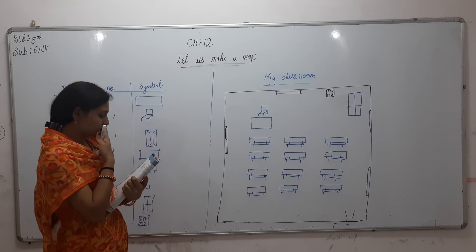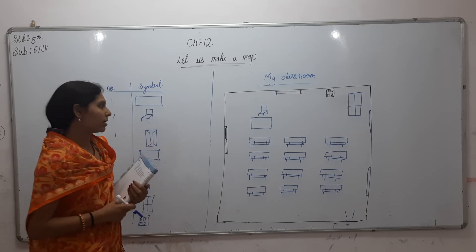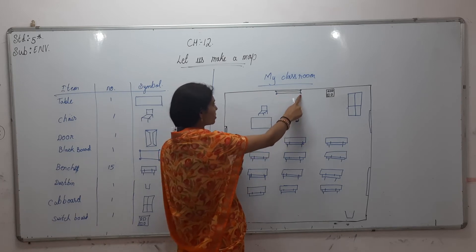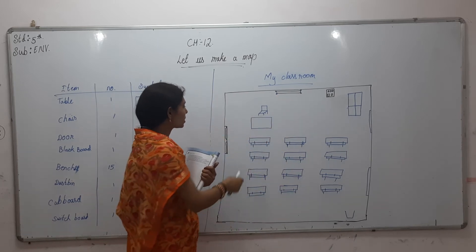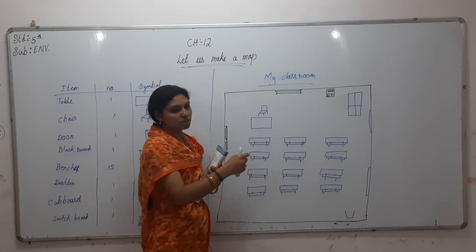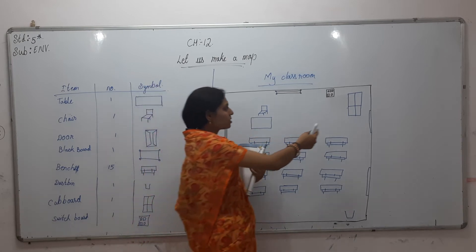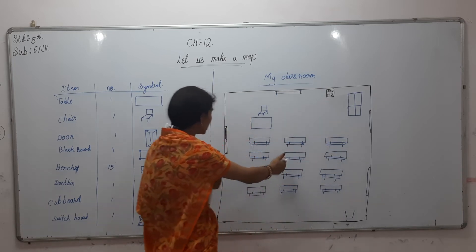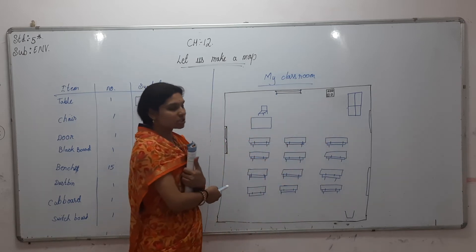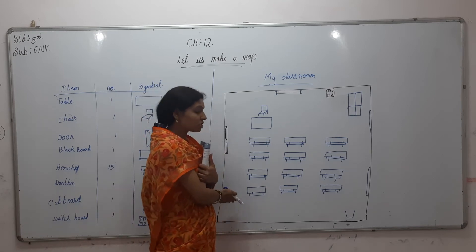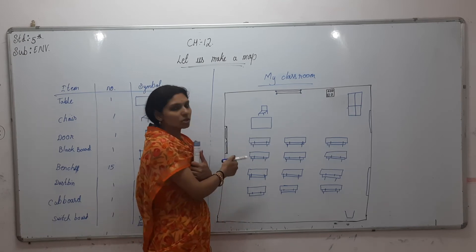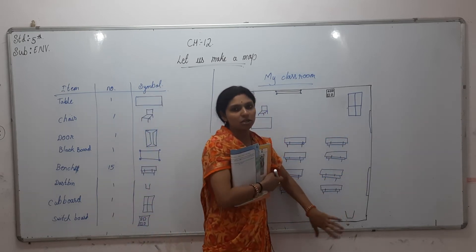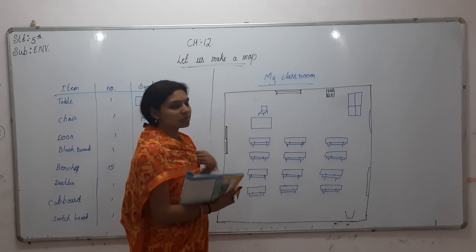I have already drawn my classroom here. I have drawn a blackboard, one table and one chair, one cupboard, one switchboard. There are 15 benches but I have drawn only 12 benches. The door is here, two windows are there, and one dustbin is there.